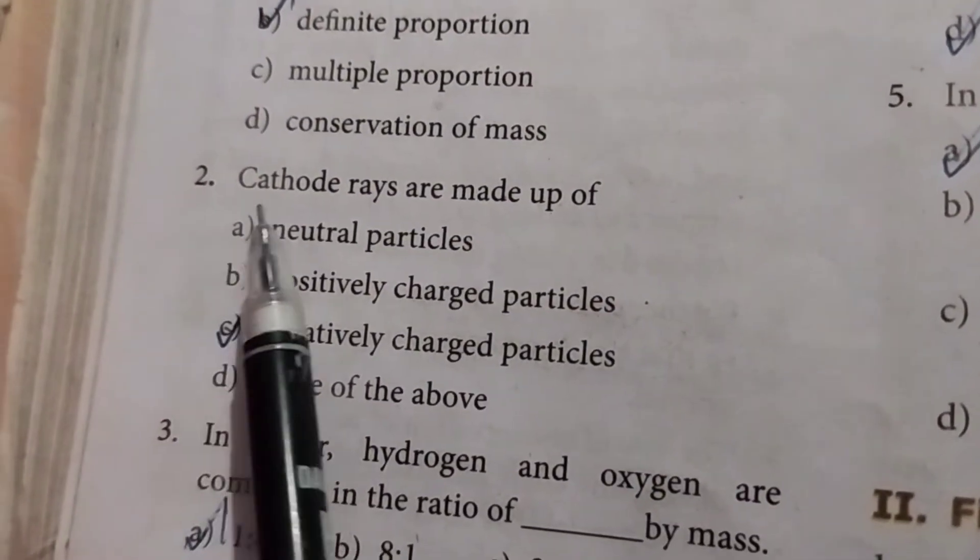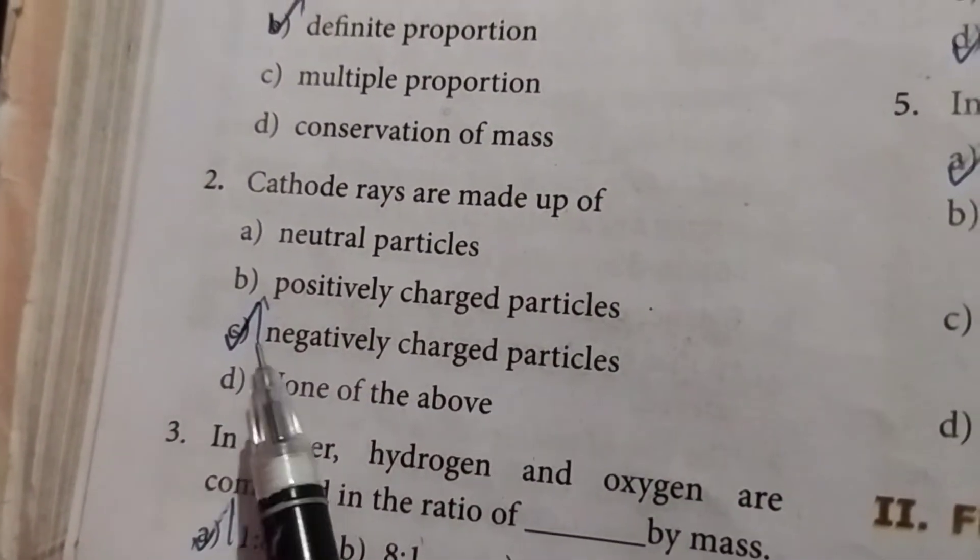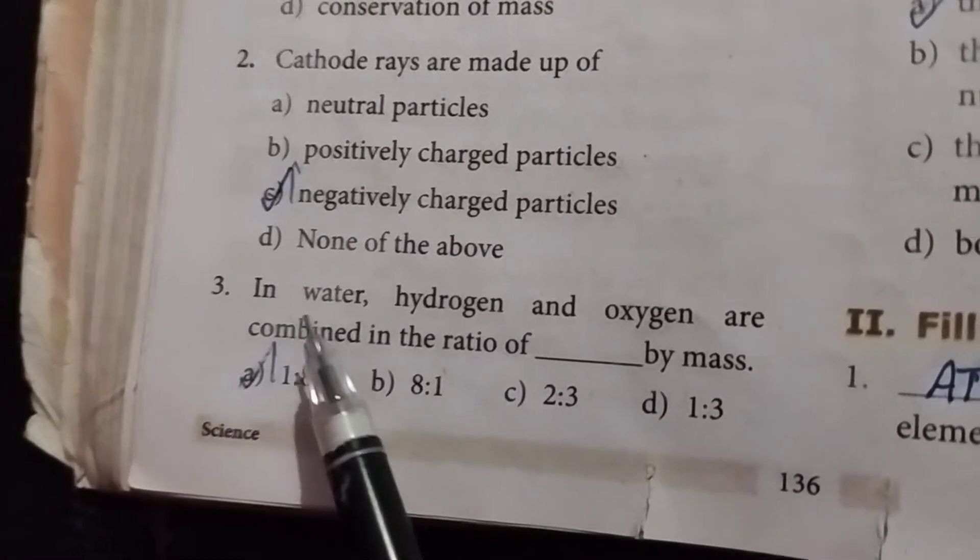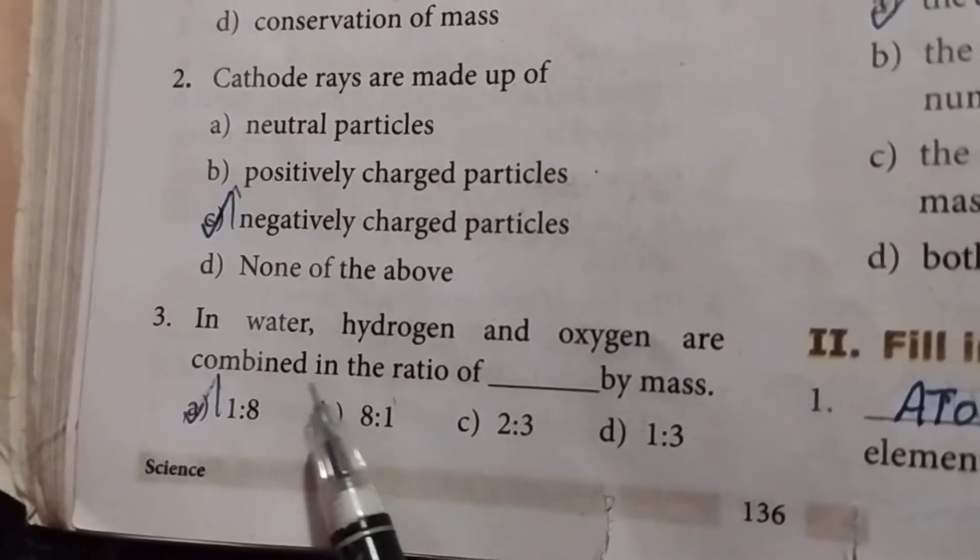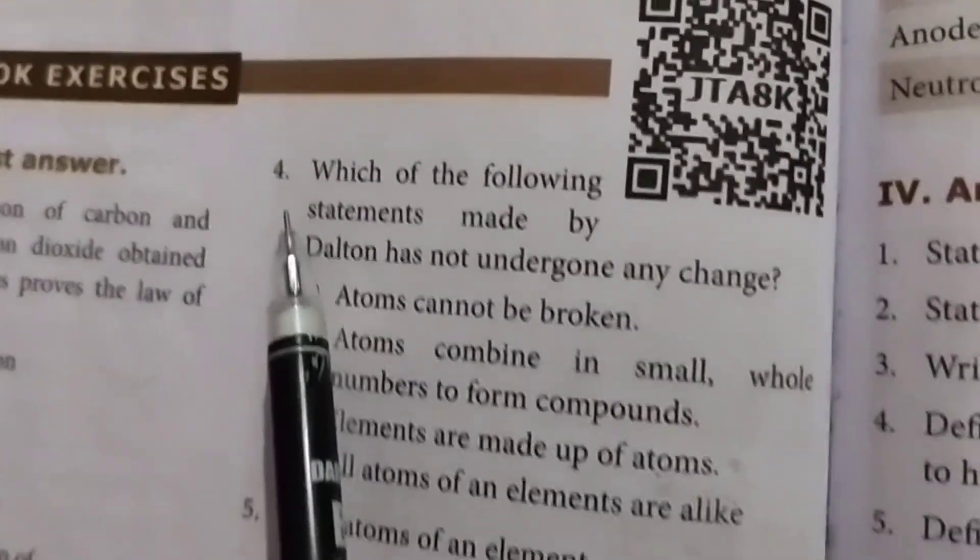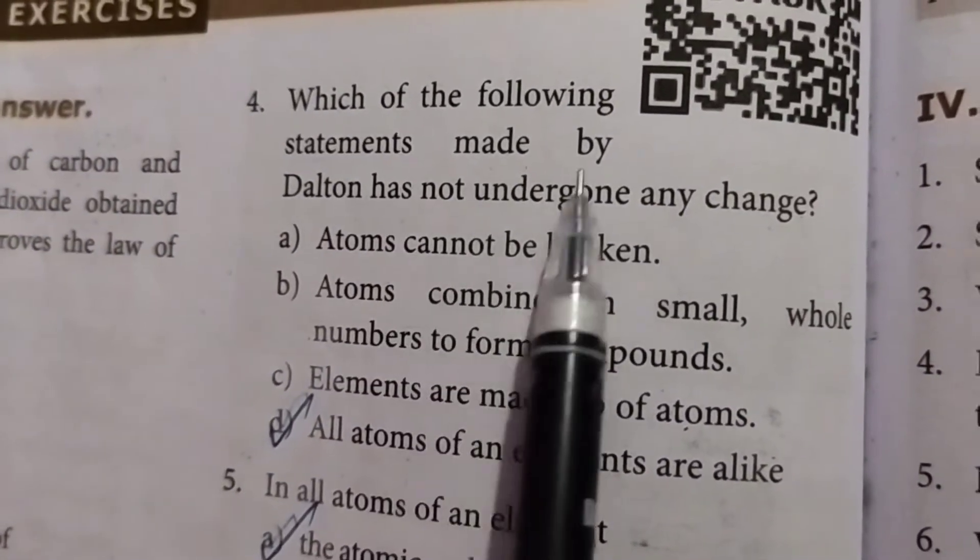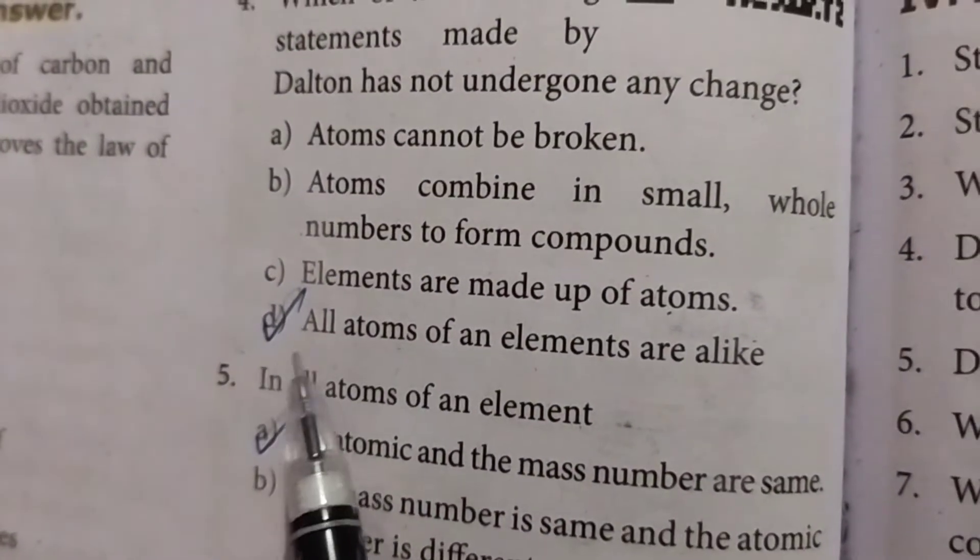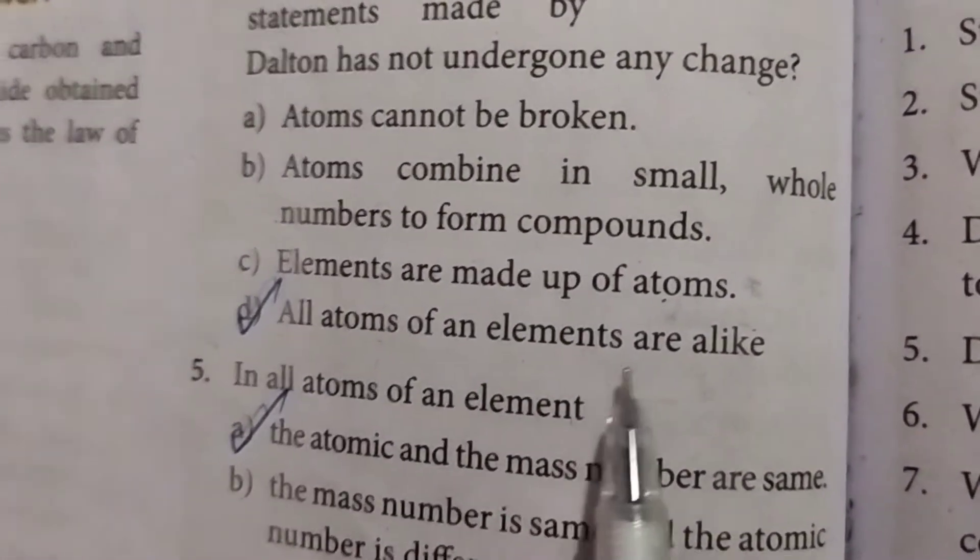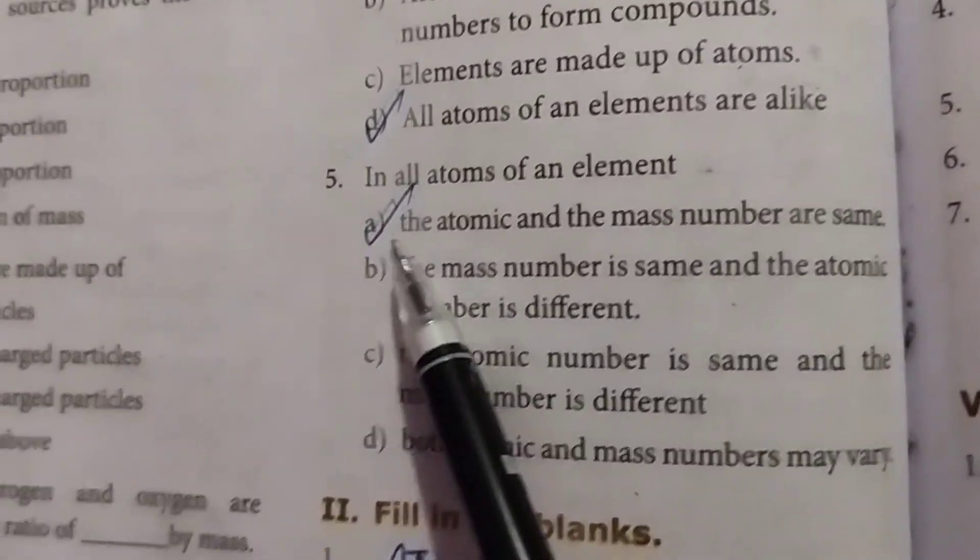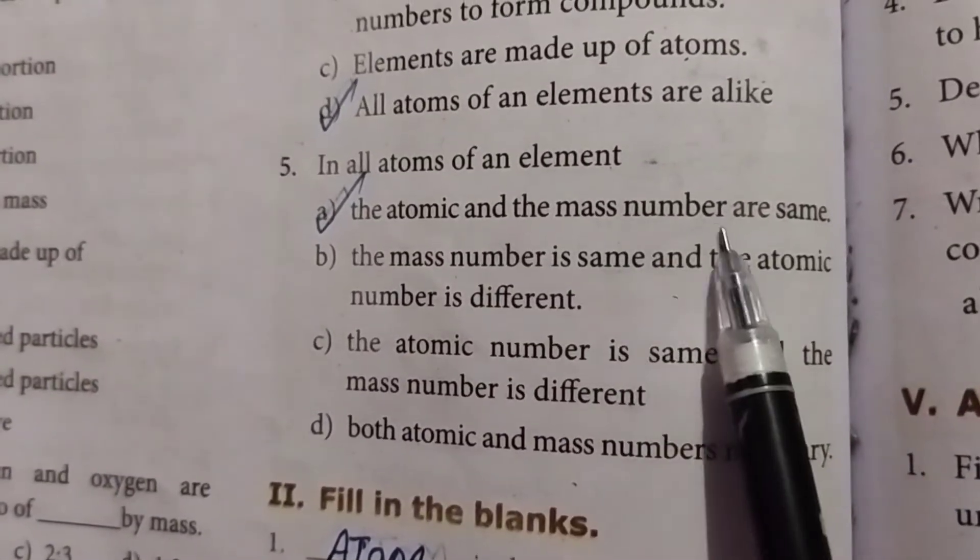Second one: cathode rays are made up of electrons. Third one: in water, hydrogen and oxygen are combined in the ratio of 1 to 8 by mass. Option A, answer. Fourth one: which of the following statement made by Dalton has not undergone any change? Option D answer: all atoms of an element are alike. Fifth one: in all atoms of an element, option A answer: the atomic and the mass number are same.